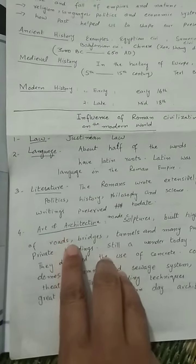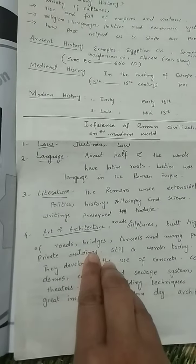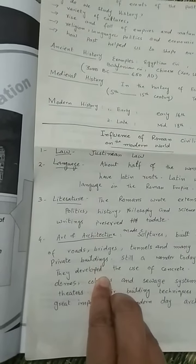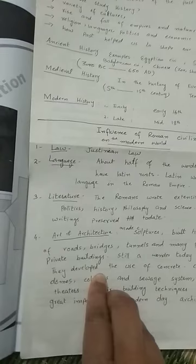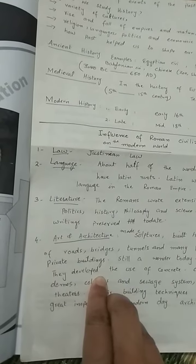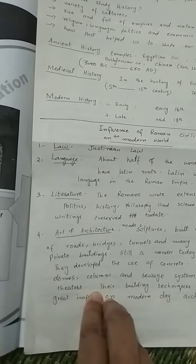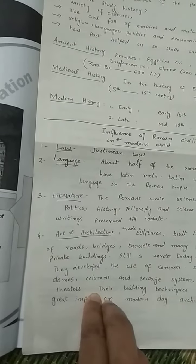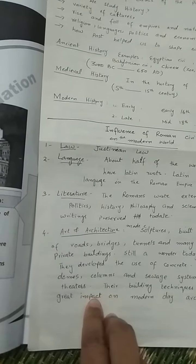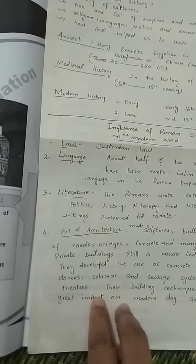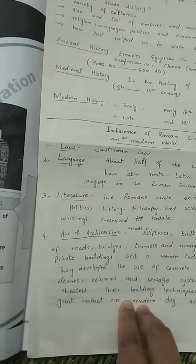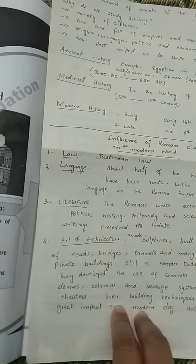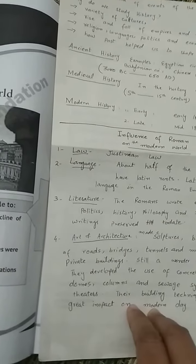Next is art and architecture. The Romans made sculptures, built roads, bridges, and tunnels, and they made many private and public buildings which are still a wonder. They developed the use of concrete and used domes, columns, and arches in their buildings. They made a wonderful sewage system, theaters, stadiums, and many other public buildings, and their building techniques are still being used in the modern day world.